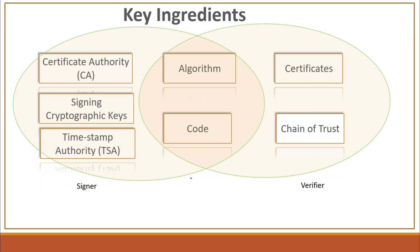The common part between the signer and the verifier is the code which is being delivered. The algorithms are supposed to be common and the same on both the signer's end as well as the verifier's end. The verifier is supposed to keep the certificates which are signed by the CA. The CA will issue the certificates and those certificates will be at the verifier's end, along with the root of trust certificate and sub-CA certificates, depending on the tier of the certificate authority that is implemented.